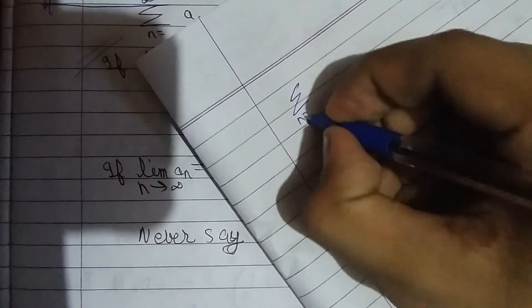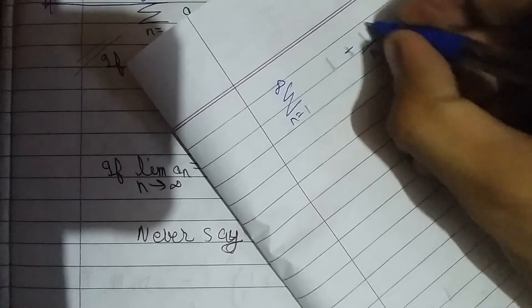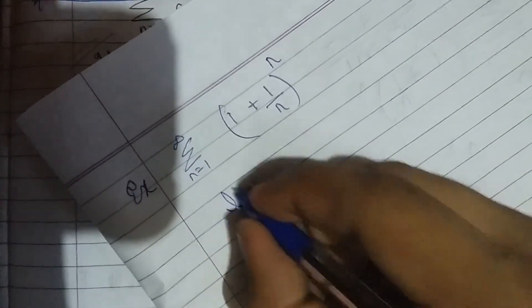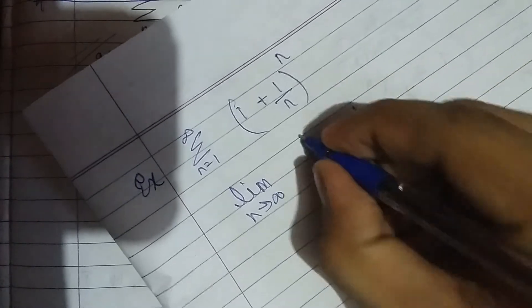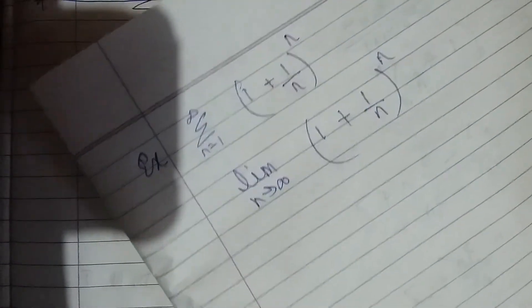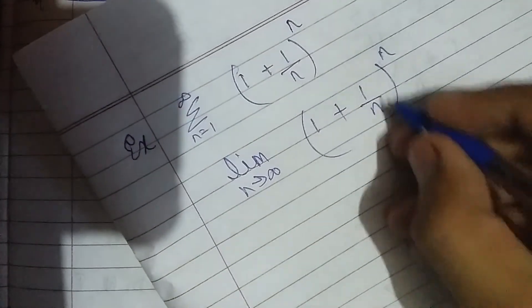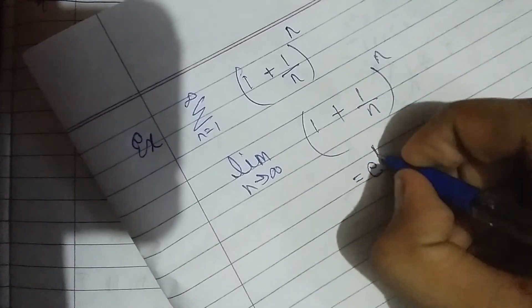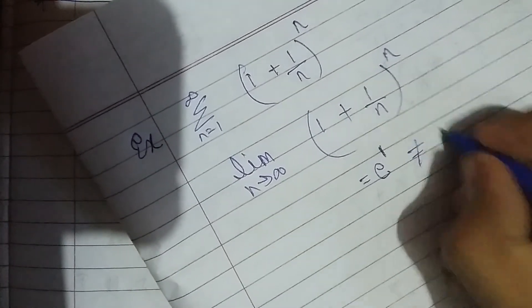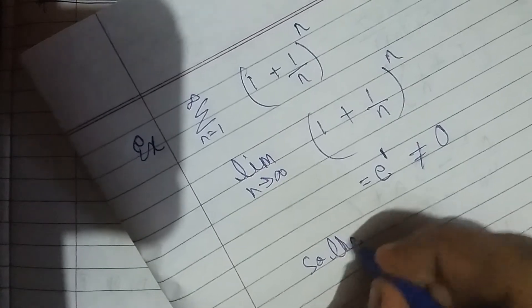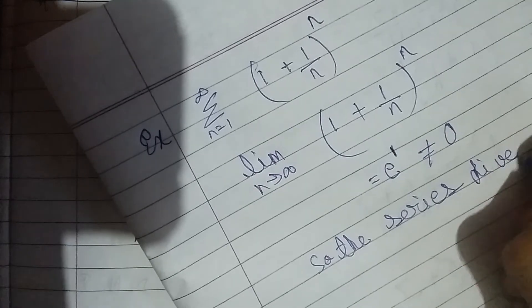For the second example, taking the limit as n tends to infinity, we use a known identity and find that it equals e. Since e is not equal to 0, we can say that the series diverges.